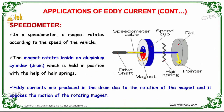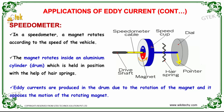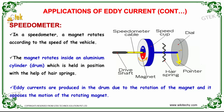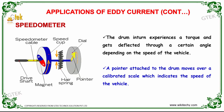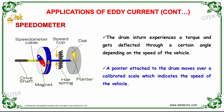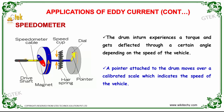Eddy current is also used in speedometers. In a speedometer, a magnet rotates according to the speed of the vehicle inside an aluminum cylinder, which is held in position with the help of a hairspring. Eddy currents are produced in the drum due to the rotation of the magnet and oppose the motion of the rotating magnet. The drum experiences a torque and gets deflected through a certain angle depending on the speed of the vehicle. A pointer attached to the drum moves over a calibrated scale which indicates the speed of the vehicle. The speedometer consists of a hairspring, speedometer cable, drive shaft, and magnet.